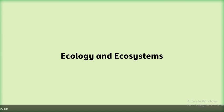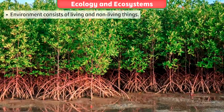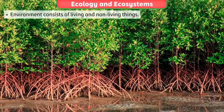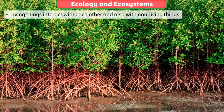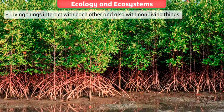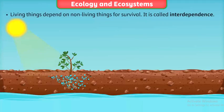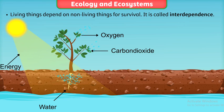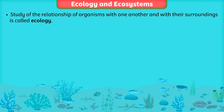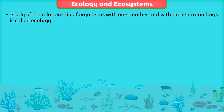Let us study about ecology and ecosystems. Our environment consists of living and non-living things. Living things include plants, animals and microorganisms that interact with each other and also with the non-living things. Living things depend on non-living things for their survival. This is called interdependence. The study of the relationship of organisms with one another and with their surroundings is called ecology.